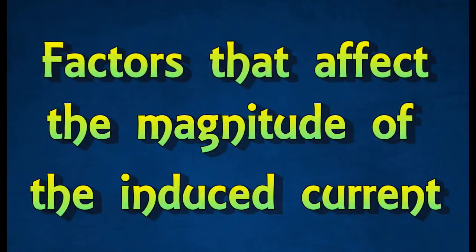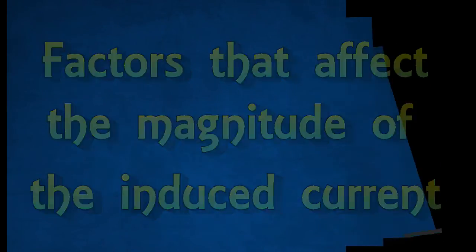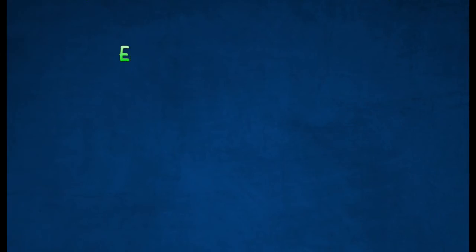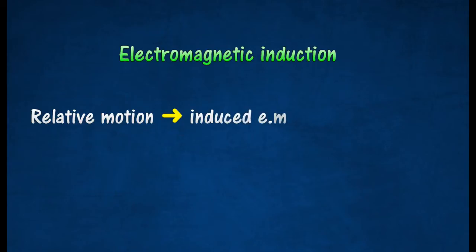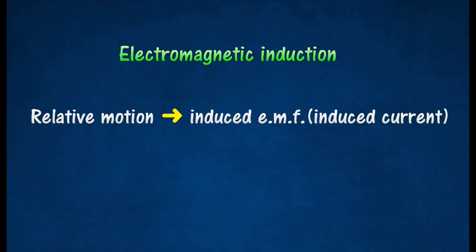Factors that affect the magnitude of the induced current. Whenever there is relative motion between a conductor and a magnetic field, an electromotive force is induced, hence an induced current is produced.